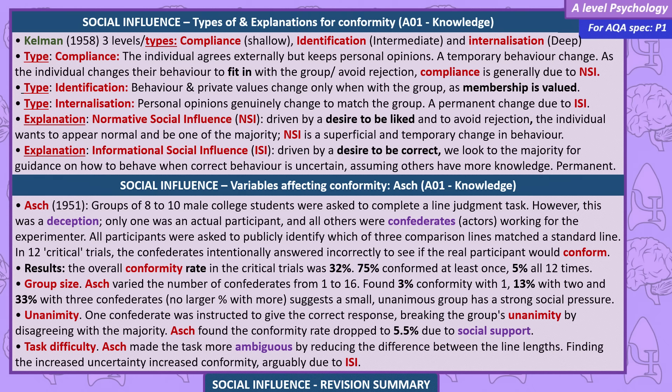Results: the overall conformity rate in the critical trials was 32%; 75% conformed at least once, and 5% conformed all 12 times. Group size variation: Asch varied the number of confederates from 1 to 16. He found 3% conformity with 1, 13% with 2, and 33% with 3 confederates, with no large percentage increase beyond that. This suggests a small, unanimous group has strong social pressure.